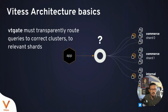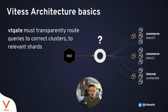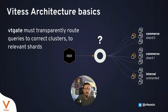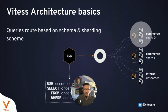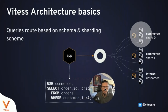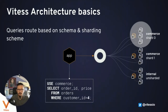How does an application access the sharded system? A VT gate routes traffic to the sharded clusters. In this example, we have two shards in a commerce database and one internal shard in an unsharded space. You can have access to the sharded environment from the application. When you search orders by customer ID, the application sends the query to VT gate, which understands where the customer ID falls and routes traffic accordingly — allowing you to scale indefinitely.